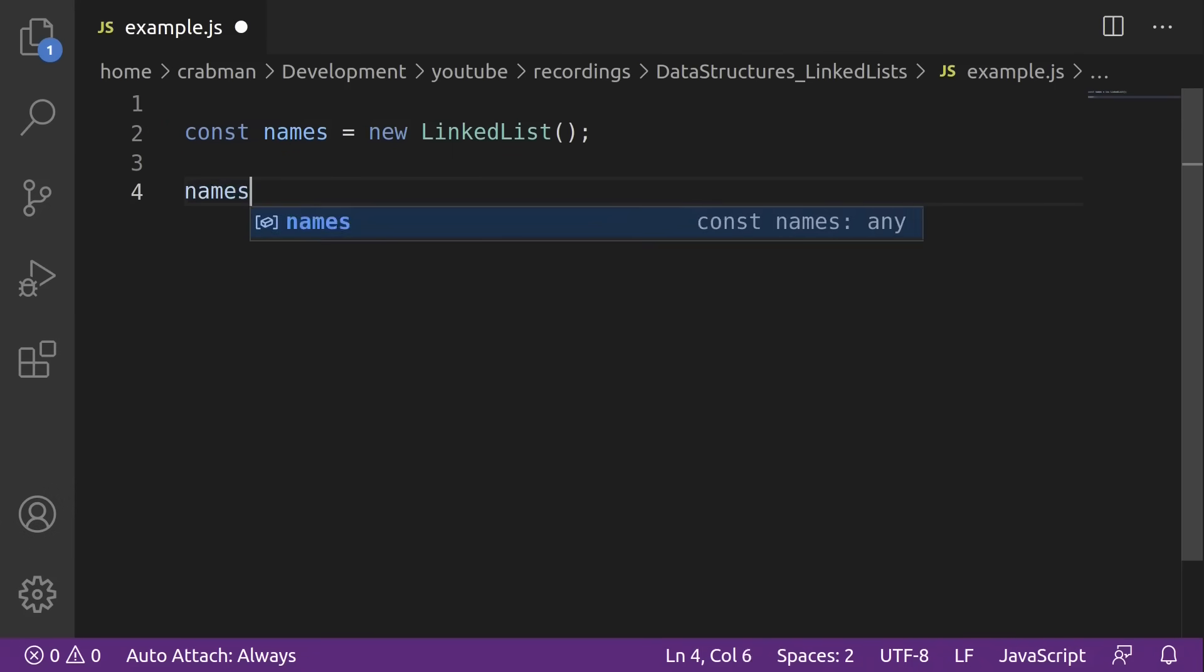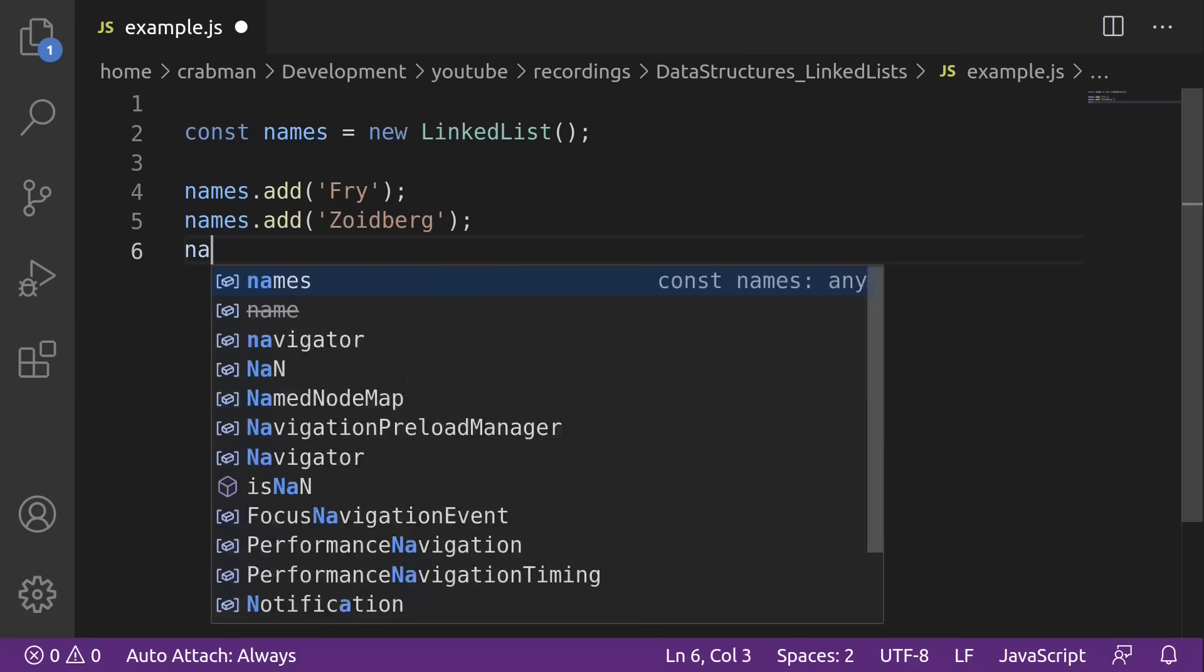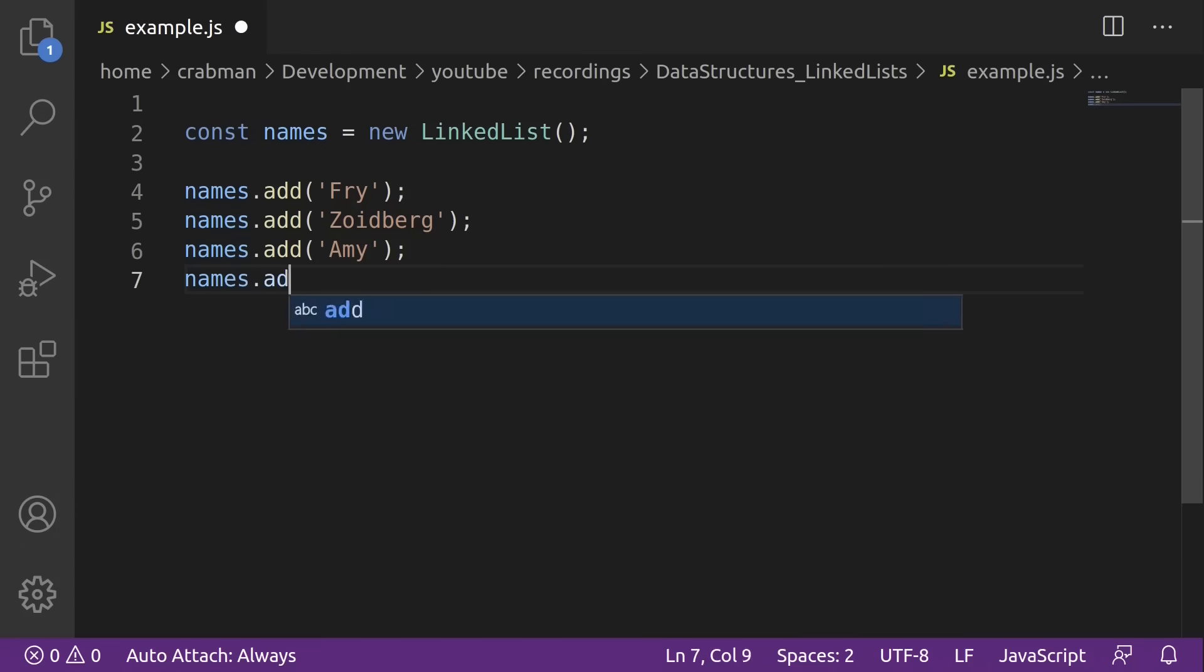and names.add fry, names.add zoidberg, names.add, et cetera. Where names is a linked list, and I've added four names to the linked list. And now I'm able to traverse it, search for items, that sort of thing, instead of having four separate variables.